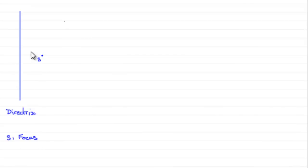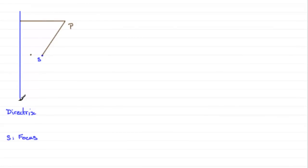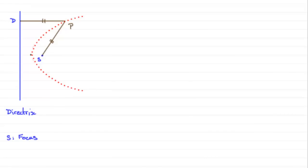One of the many points we could have for P would be a point here in the middle of S and the directrix. Another point would be one out here where the distance to point P is exactly the same as the distance to the directrix. These two distances are exactly the same. If we look at all points where PS equals PD, the distance from P to the line, we get a curve — and with an infinite number of such points, we get a parabola.